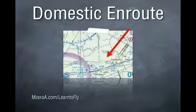And Domestic Enroute is just anywhere else. If it's not shaded, or not a surface, or not a transition, it's Domestic Enroute. And Class Echo starts at 1,200 feet there.